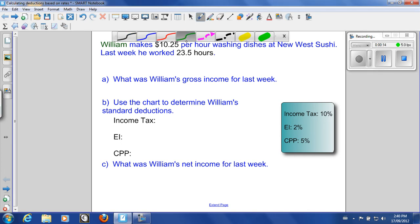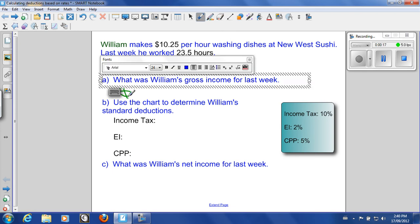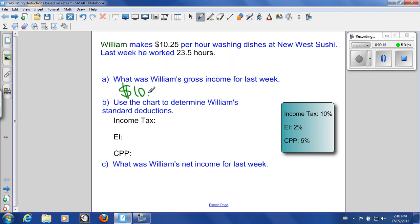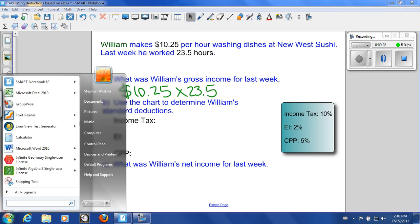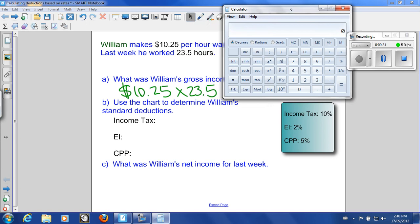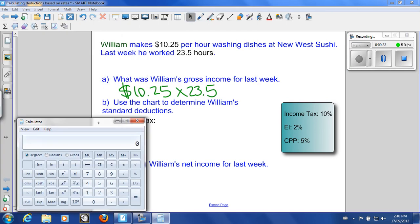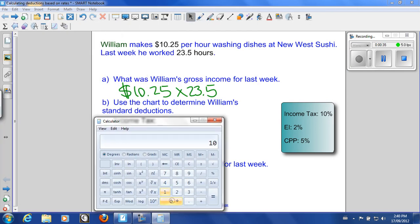Well $10.25 an hour times the 23.5 hours will give us his gross income for the week. So let's see what we get. Let's call our calculator here and we have $10.25 times 23.5. So $240 and if I round to the nearest penny that's going to be 88 cents. So $240.88.